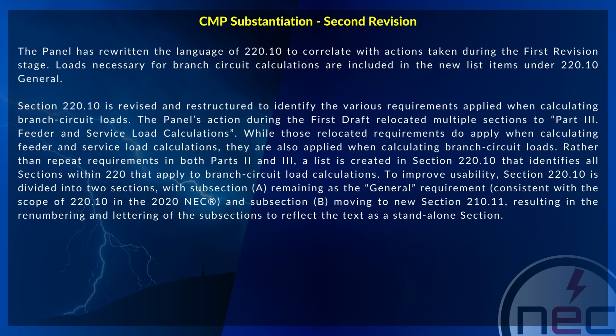The panel has rewritten the language of 220.10 to correlate with actions taken during the first revision stage. Loads necessary for branch circuit calculations are included in the new list items under 220.10 General. Section 220.10 is revised and restructured to identify the various requirements applied when calculating branch circuit loads.